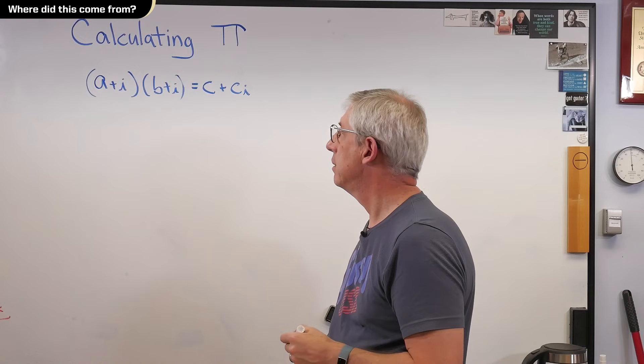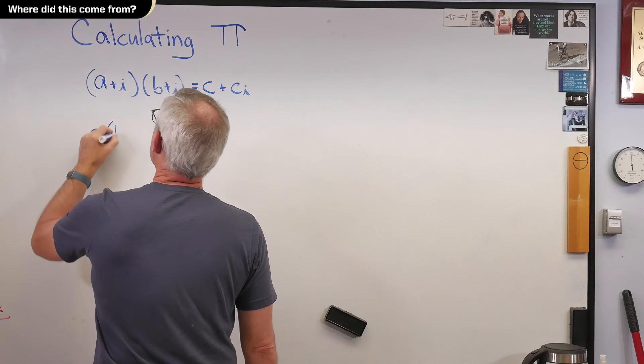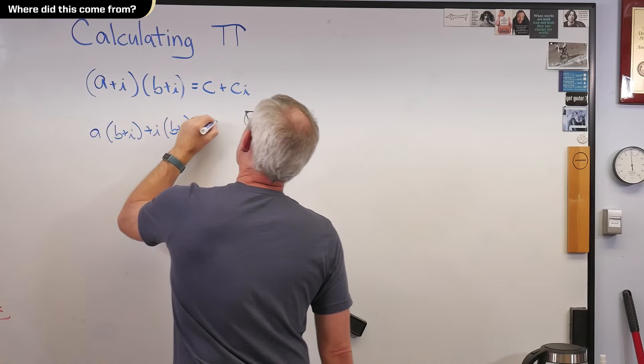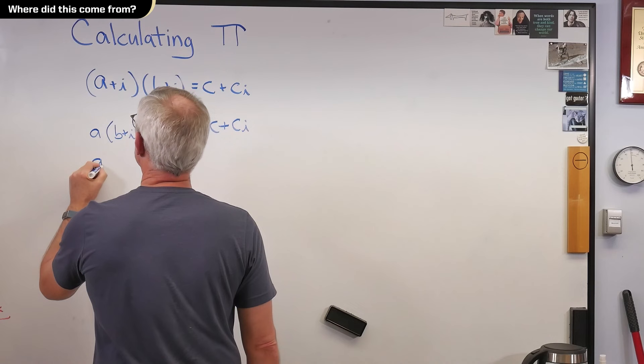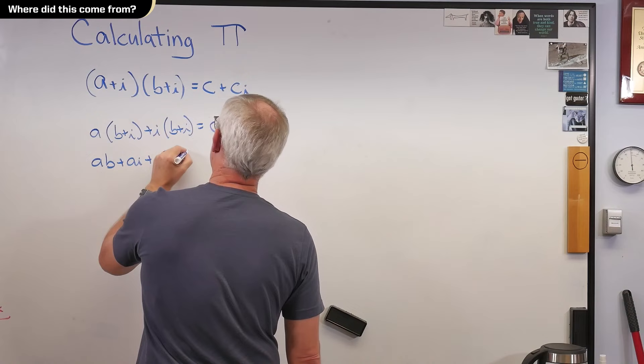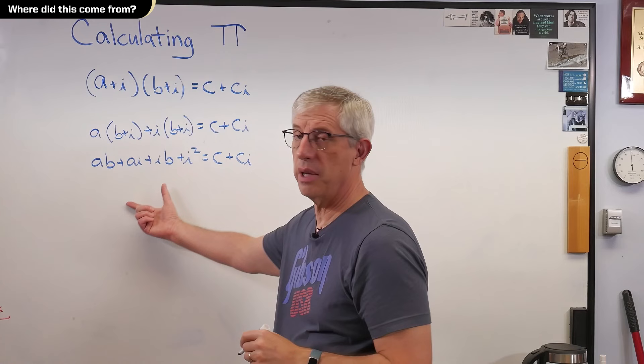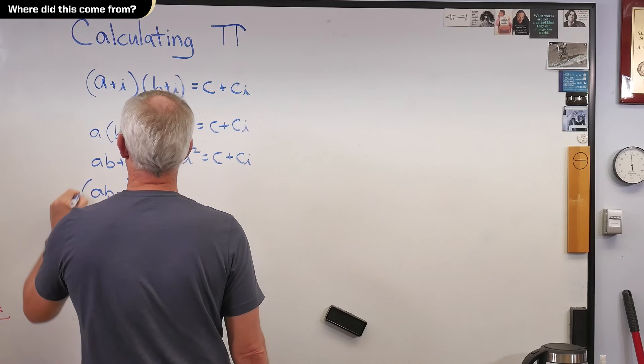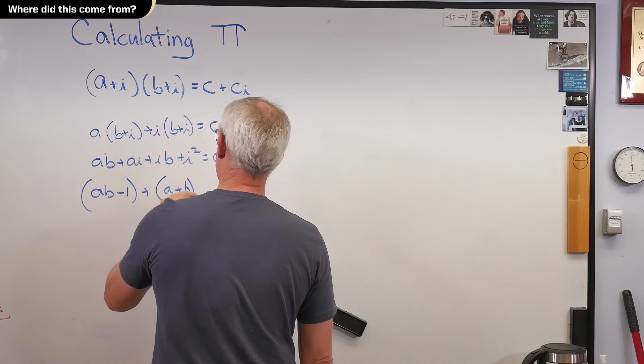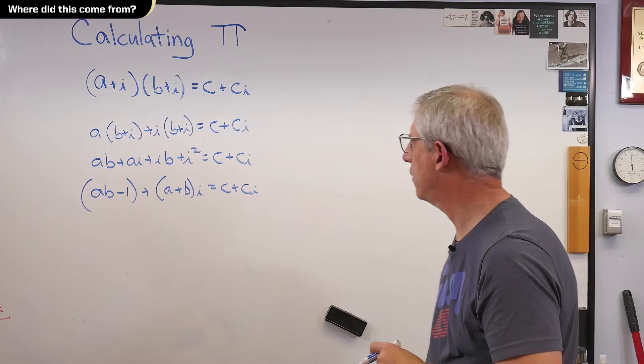Well, let's just multiply this out and see what happens. So it looks like ab plus i times a plus i times b plus i squared equals c plus ci. That's starting to look like that's too many variables. Well, it's actually not. So far so good. Now let's collect the real and the imaginary terms here. So that looks like ab minus 1, plus a plus b times i equals c plus ci. Still looks like too many variables, and it kind of is, but not like you think.